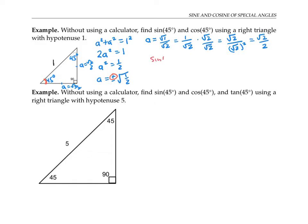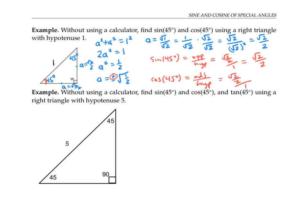Now I can figure out the sine of 45 degrees by computing the opposite over the hypotenuse. The opposite is the square root of two over two and the hypotenuse is one. So the sine of 45 degrees is the square root of two over two. Cosine of 45 degrees is adjacent over hypotenuse — that's this side length over the hypotenuse — so that's also the square root of two over two.